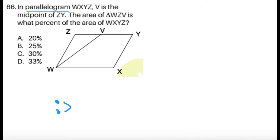Question 66. In parallelogram WXYZ, V is the midpoint of ZY. The area of triangle WZV is what percent of the area of WXYZ? Take note: we're given a parallelogram with no other conditions other than the fact that V is the midpoint of ZY.